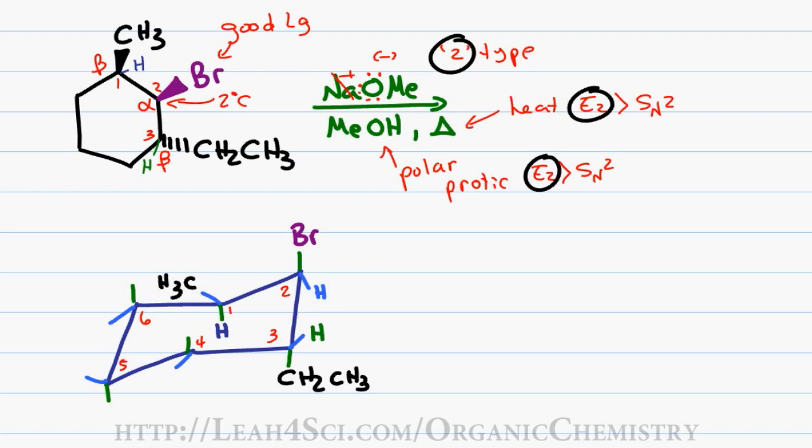Now this is where you want to pay attention. An E2 reaction can only proceed when the groups are located anti and coplanar. Your professor may refer to it as periplanar, it means the same thing, they have to be lined up in the same plane.